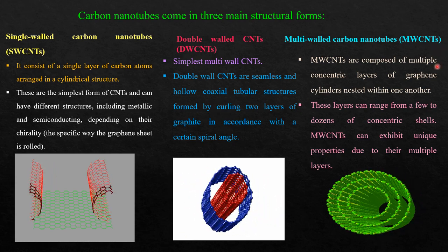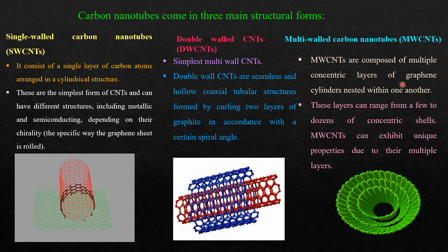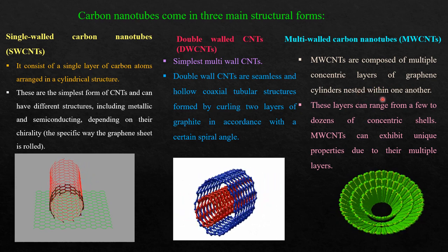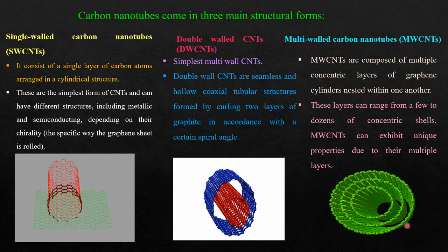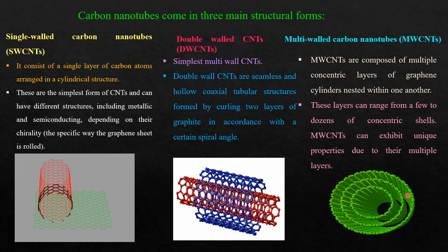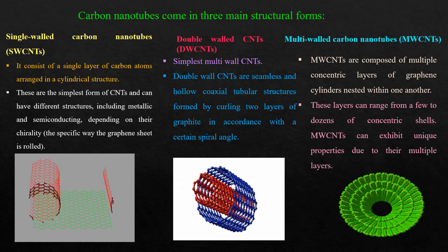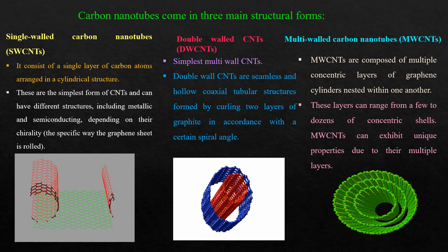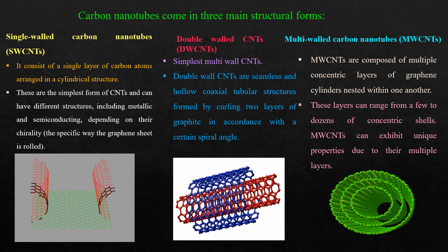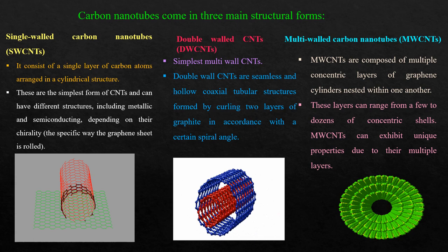The third type is multi-walled carbon nanotubes, which are composed of multiple concentric layers of graphene cylinders nested within one another. These layers can range from a few to dozens of concentric shells and can exhibit unique properties due to their multiple layers.